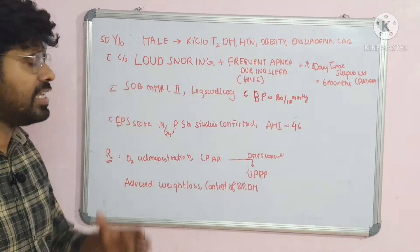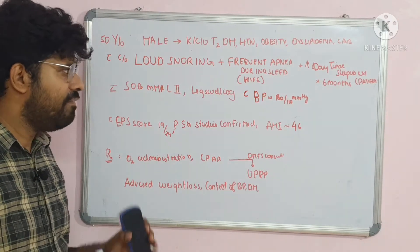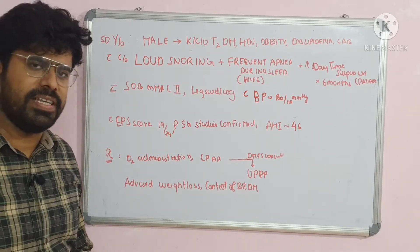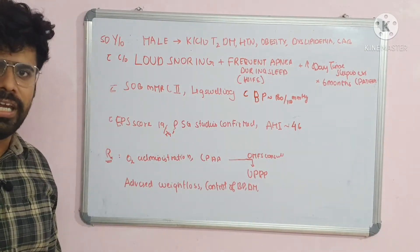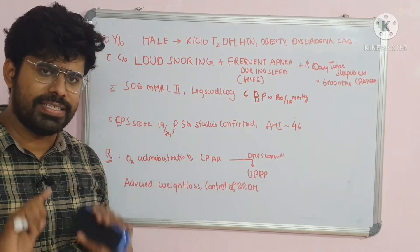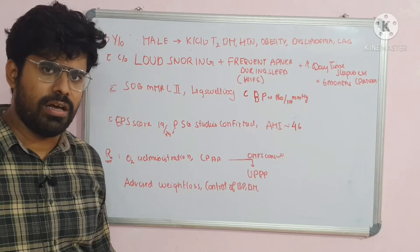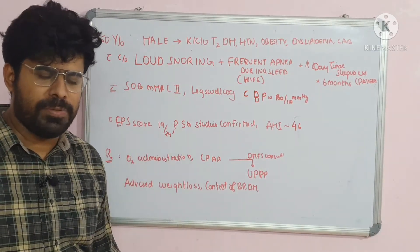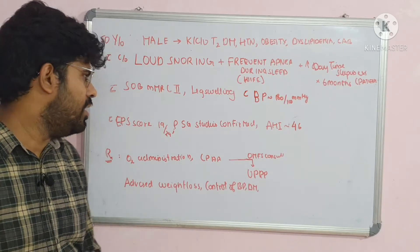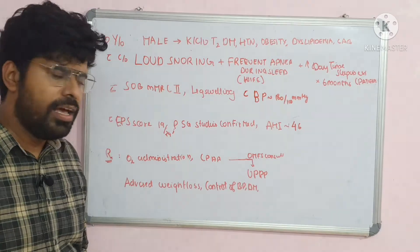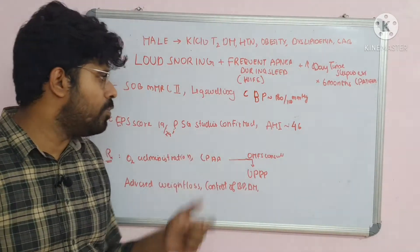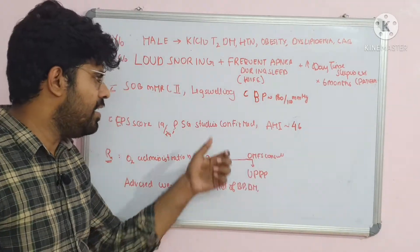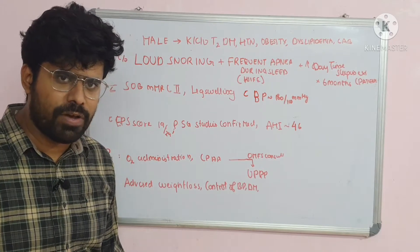On examination, the patient is also having breathlessness for the past three days with complaints of leg swelling. When examined, he has a blood pressure of 180/110 and the patient is found to have increased neck circumference and waist circumference, and the patient was thought to be having obstructive sleep apnea. The patient had an Epworth Sleepiness Score of 19 and was subjected to polysomnographic study, and his apnea-hypopnea index was found to be 46. The polysomnography study confirmed the presence of obstructive sleep apnea.